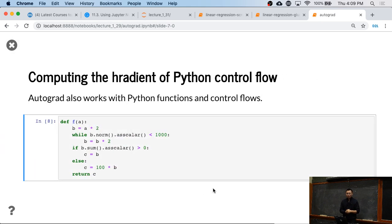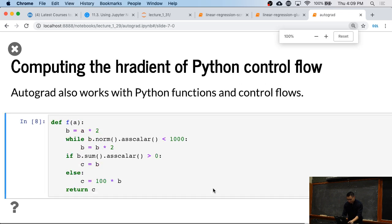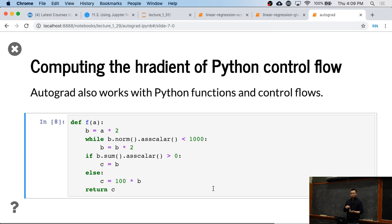The other thing here is that we can write pretty complex functions. So we write f equals to, with a as an input. A is an array, we're going to generate a later. So we first compute b equals a times 2. And then, while b L2 norm less than 1000, we're going to multiply b by 2. At the end, if b sum larger than 0, we're going to return b, otherwise we're going to return 100 times b.